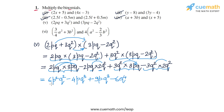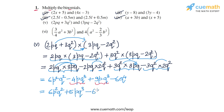In the four terms obtained, the second and third terms are like terms — minus 4Pq cubed and plus 9Pq cubed — so we combine them. This gives 6P squared Q squared, plus 5Pq cubed, and minus 6Q to the power 4. This expression is the answer for part 5.